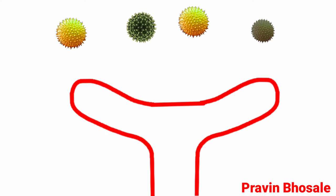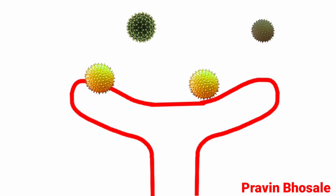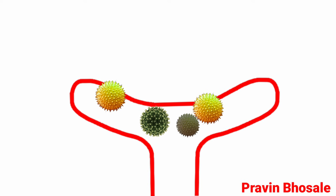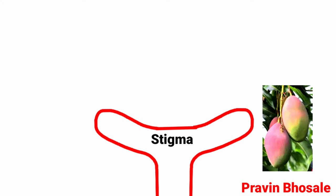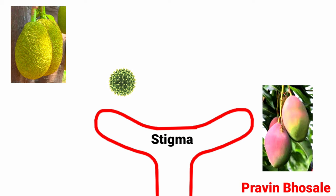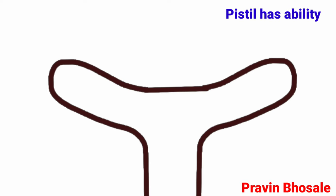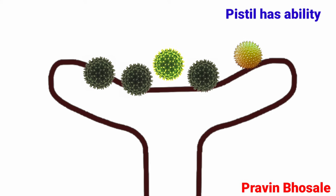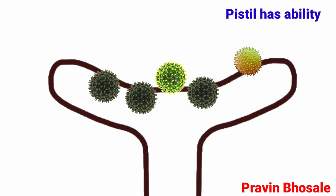Pollination does not guarantee the transfer of the right type of pollen. Often, the wrong type also lands on the stigma. For example, if pollen from a jackfruit flower gets deposited on the stigma of a mango flower, that is the wrong type of pollen. Here, the pistil has the ability to recognize and accept only the right or compatible pollen of the same species.